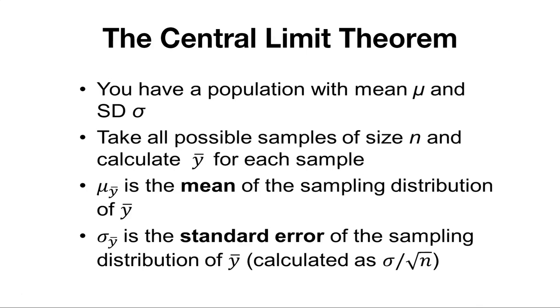Mu sub y bar then could be considered the mean of the sampling distribution of those means y bar. Sigma sub y bar is what we call the standard error of the sampling distribution of y bar. That is, if we know the population level's standard deviation sigma, we can divide it by square root of n to find the standard error.